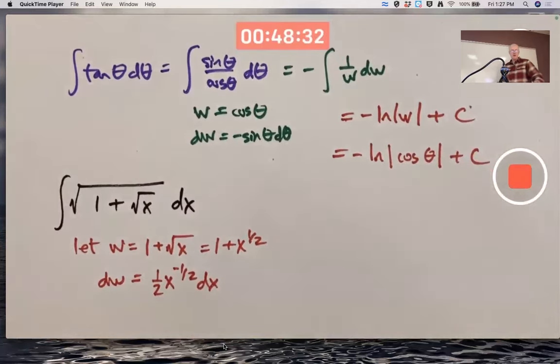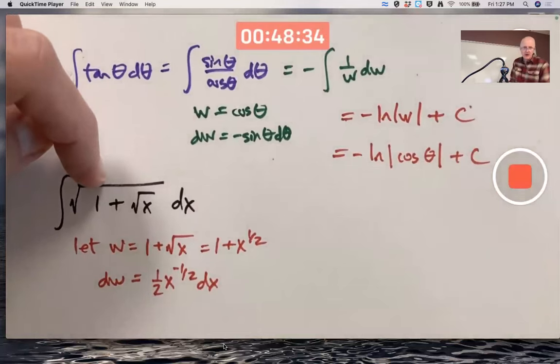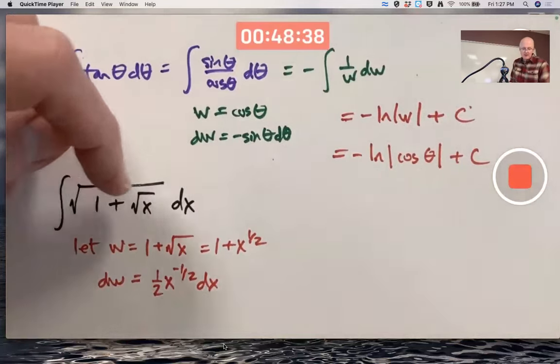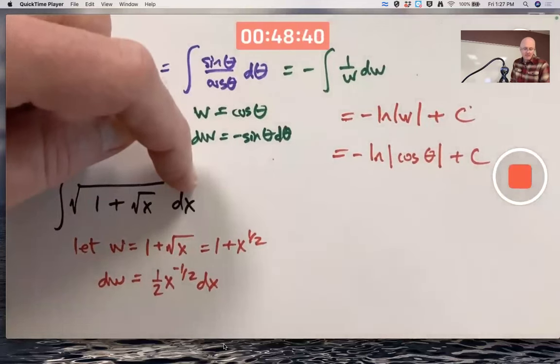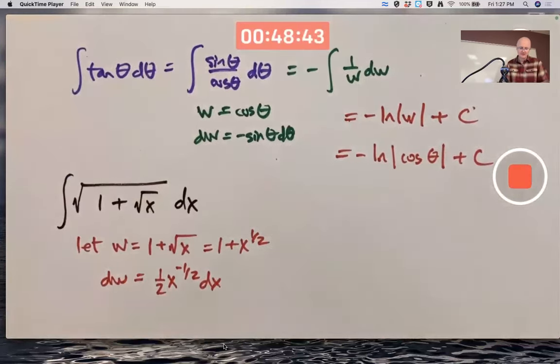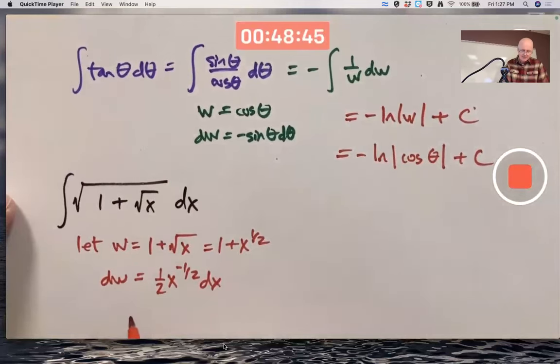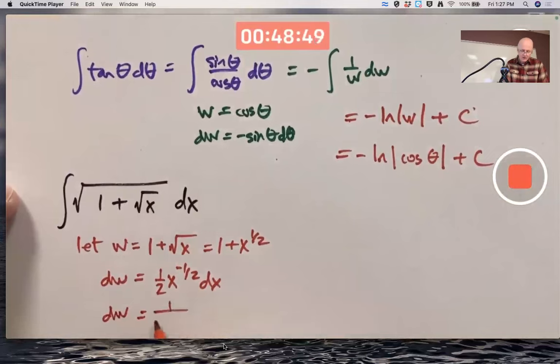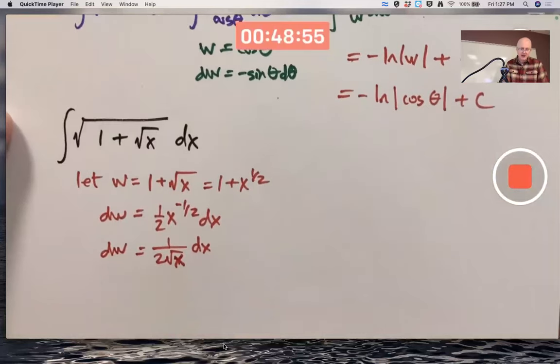So I could replace this square root, this big square root, with just square root of w. But what about dx? Evidently, I need to solve this equation for dx. It's the same as 1 over 2 square root of x dx. I guess that means I should multiply both sides by 2 times square root of x. dx would be 2 square root of x dw.